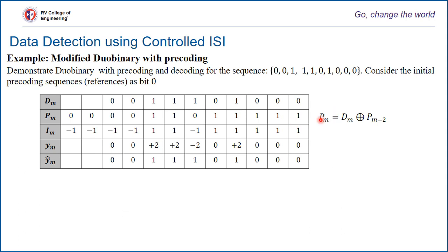That is how we generate the modified duobinary precoded sequence. The next block is NRZ modulation: all zeros are represented as minus 1, and all ones are modulated as plus 1. Wherever there is 0 it is represented as minus 1, and wherever there is 1 it is represented as plus 1. This is the modified duobinary with pre-coding sequence which is transmitted into the channel.